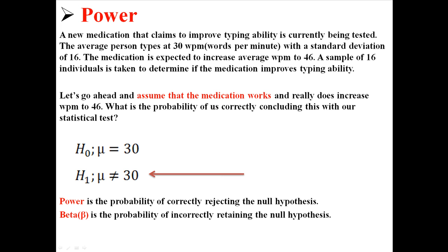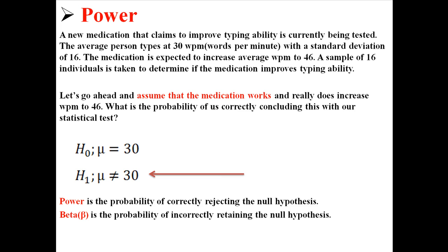So power is our probability of correctly rejecting the null hypothesis and beta is the probability of us incorrectly retaining the null hypothesis. So we're going to do this question using an alpha of 0.05.